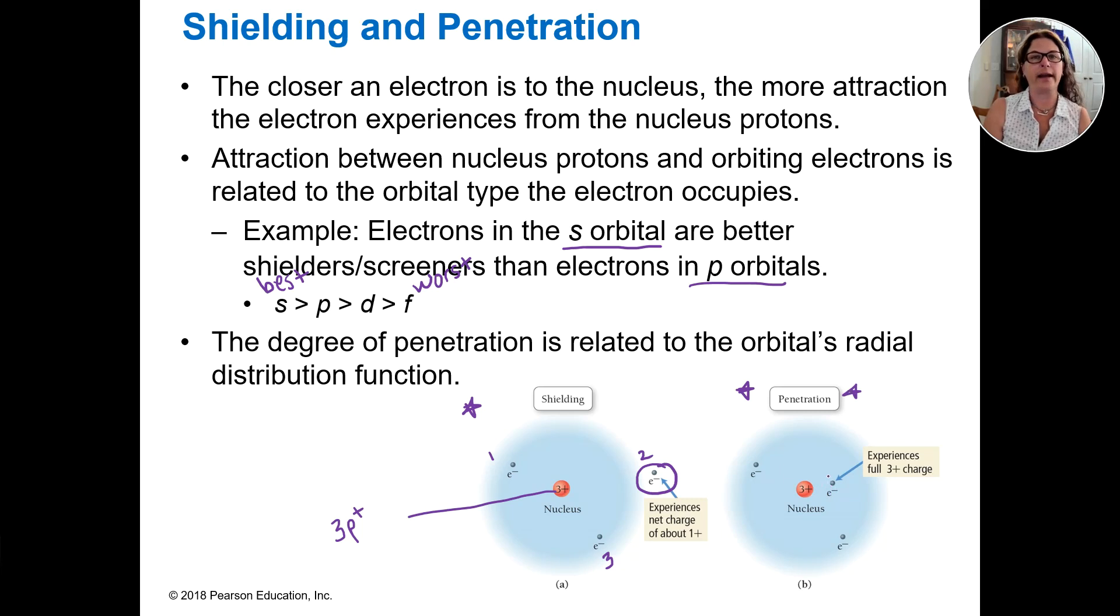Penetration. How far in can it get? How close to that nucleus can it get? This electron right here, not so much shielded, but if I had another electron here and maybe another one here, these two electrons are shielding this electron from being attracted to the protons in that nucleus.